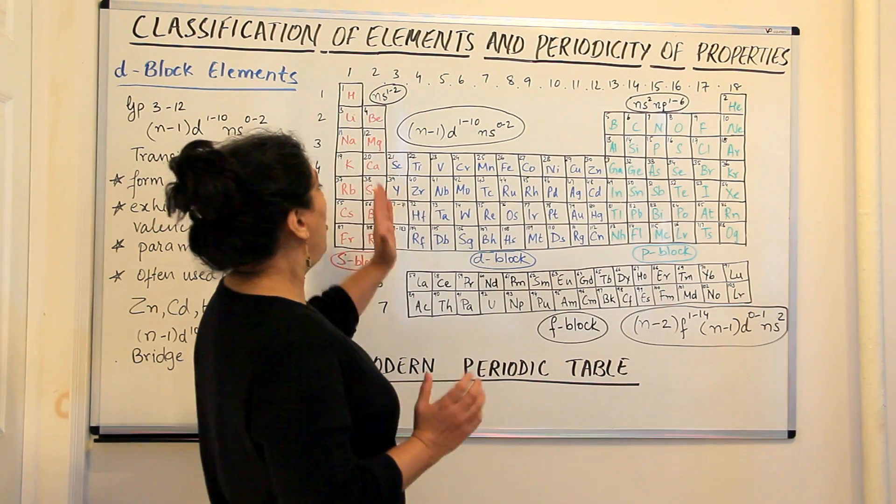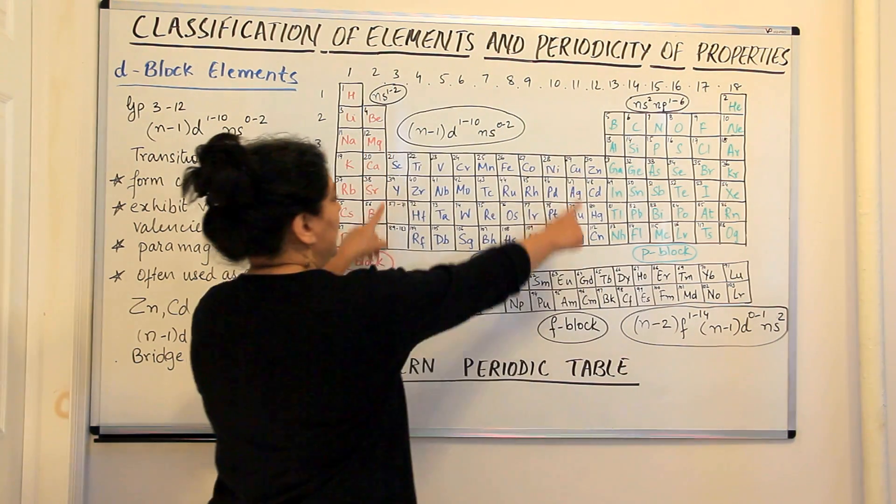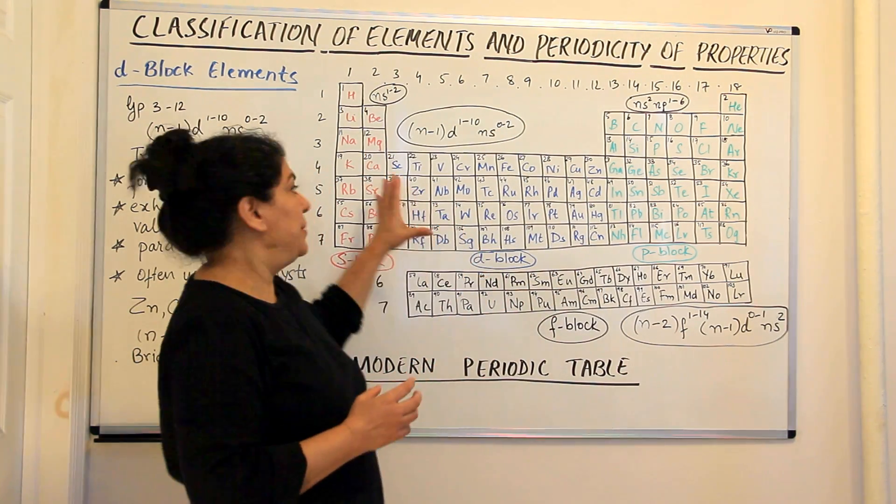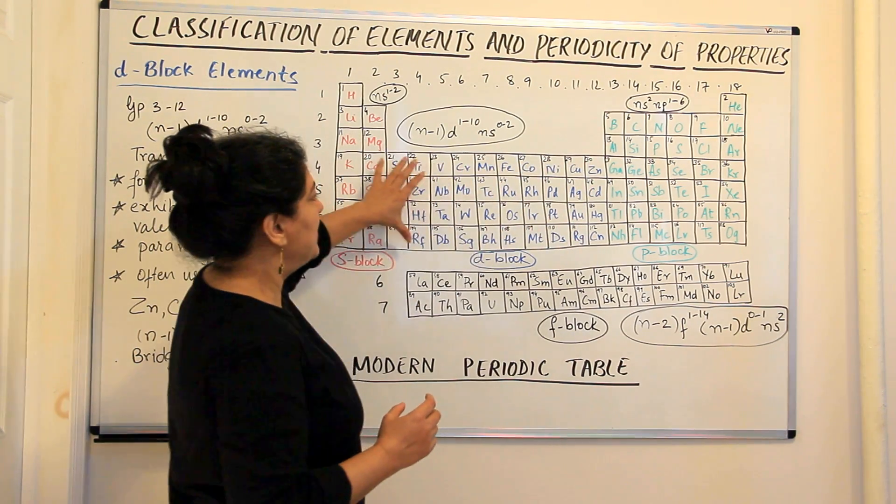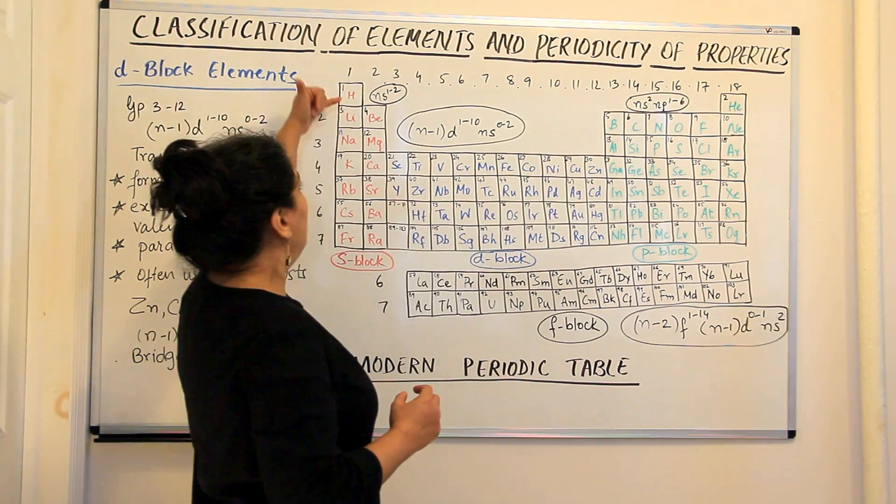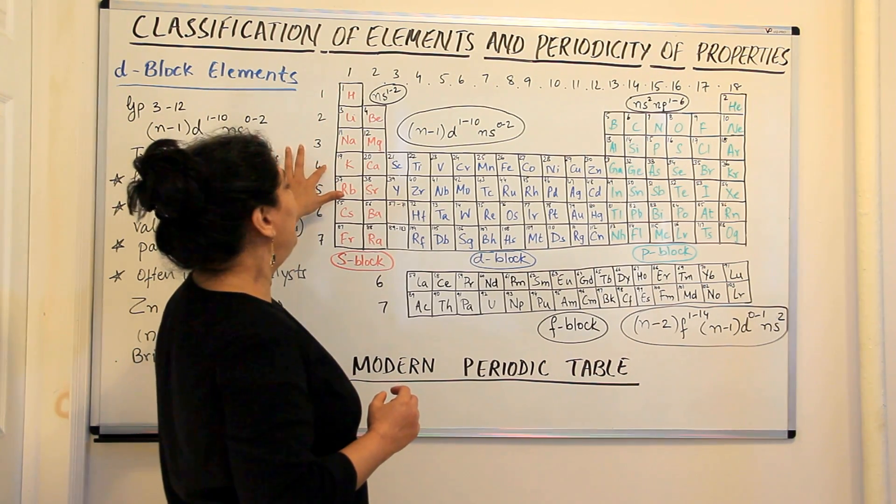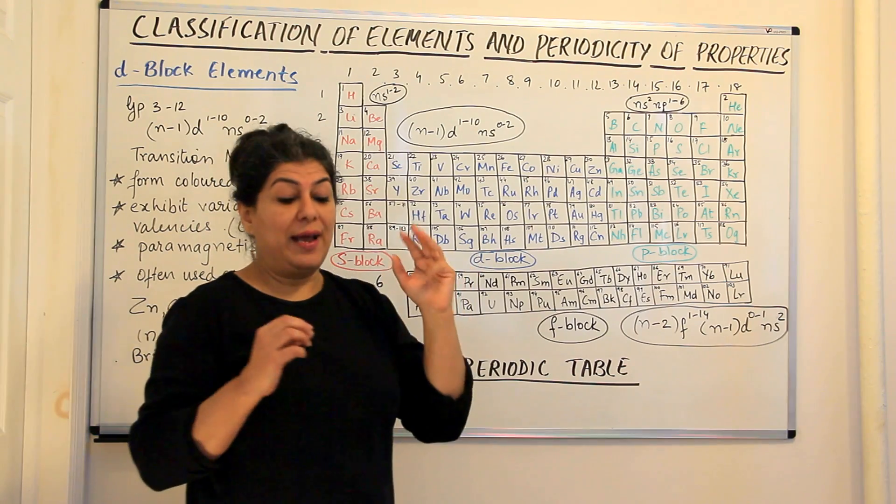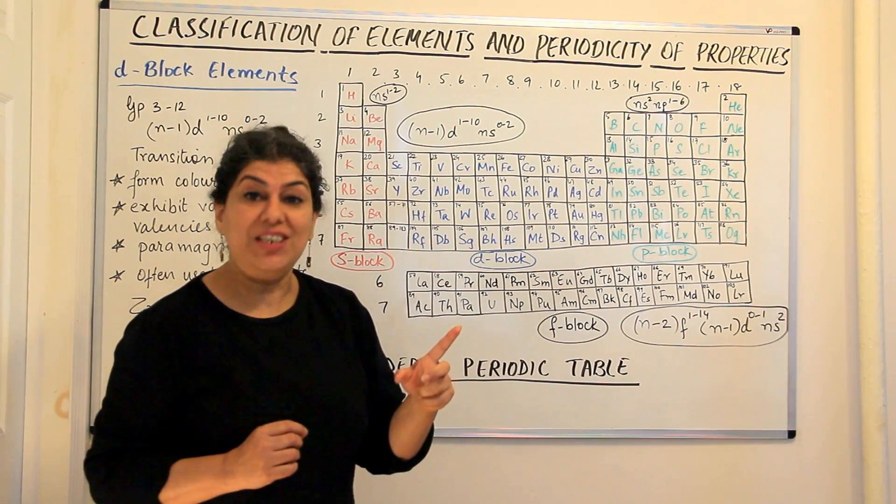The D block elements start from the third group to the twelfth group. They are written here in the periodic table where I have written them in blue and they form these four periods here. They are present in four periods. They are not present in the first three periods.